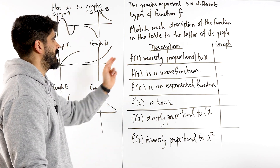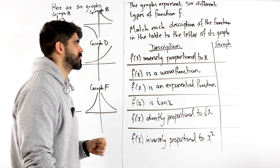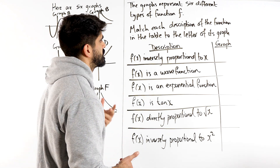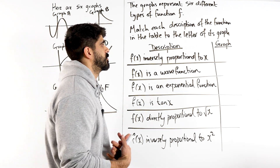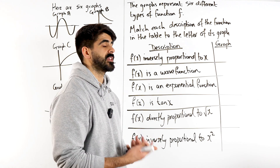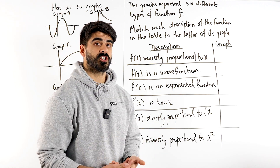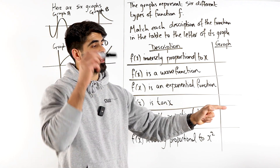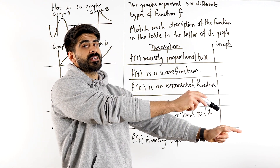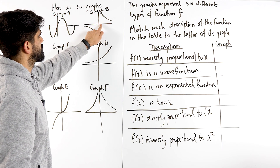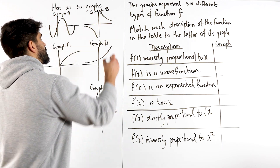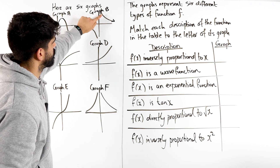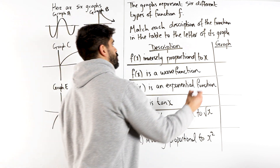So let's go one by one. It says f is inversely proportional to x. That just means as one value goes up, the other is getting smaller. So it's easier to think about it as: as x gets larger, the y value should be getting smaller — we're going to be moving this way. As x continues to get larger, you can see the y values are coming down. That is for sure graph B.